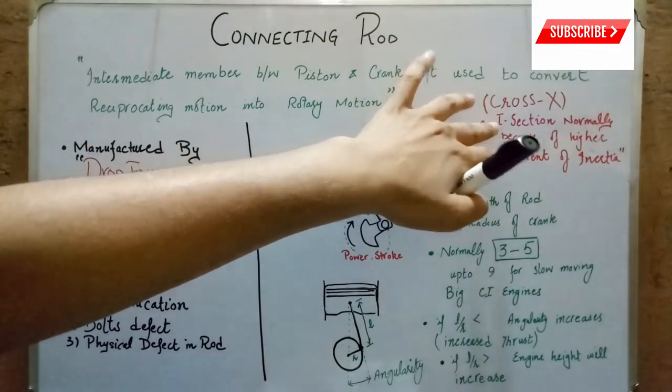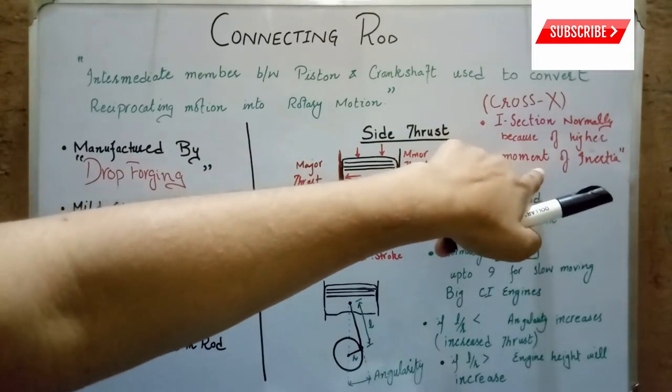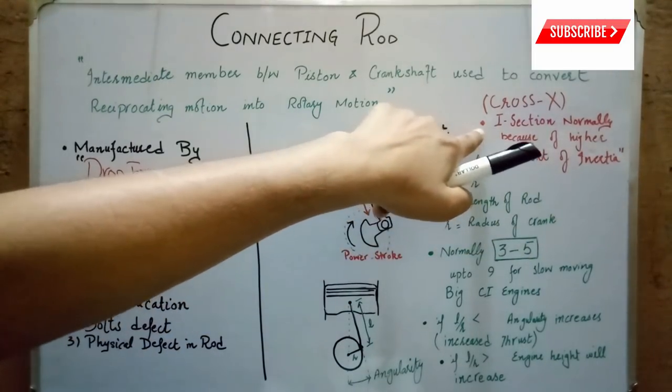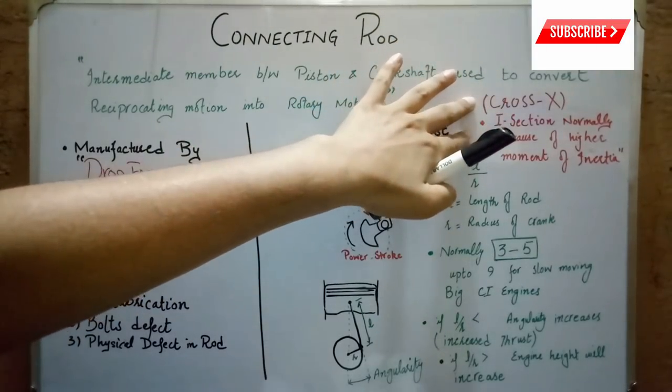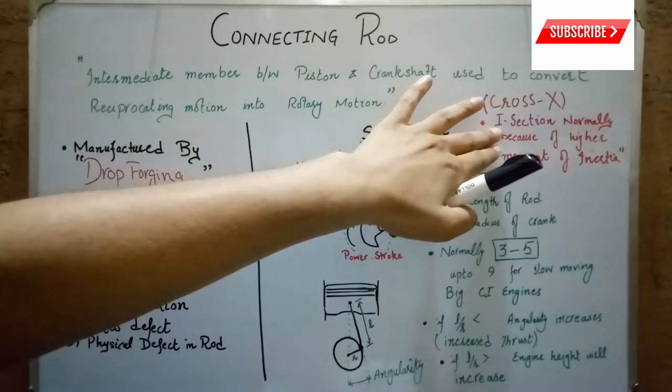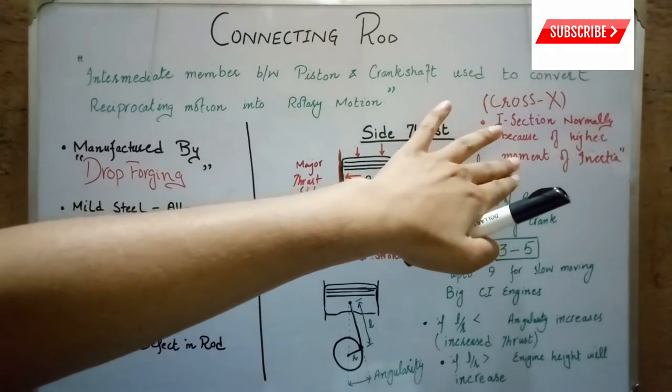To avoid failure, usually the cross-section of the connecting rod is I-section due to its higher moment of inertia. The cross-sections can be circular, rectangular, and S-section as well, but normally I-section is preferred due to its higher moment of inertia.